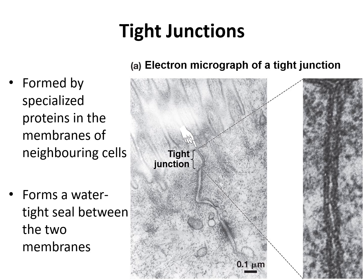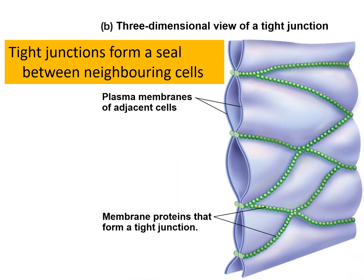The first type is a tight junction. It holds cells together, but more importantly it prevents material from moving between cells. The extracellular matrix is not waterproof, but this tight junction is watertight. It almost looks like stitching — two plasma membranes with rows of proteins embedded in them coming together and forming a watertight seal. A substance trying to sneak through this tight junction can't get past these seals.